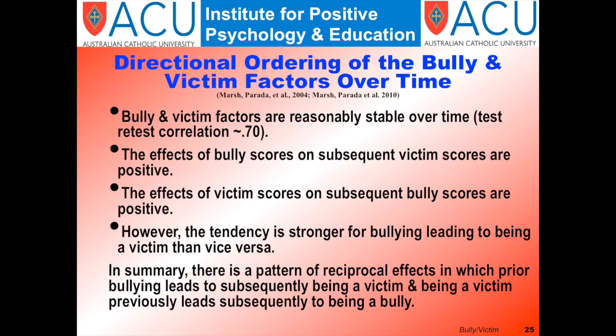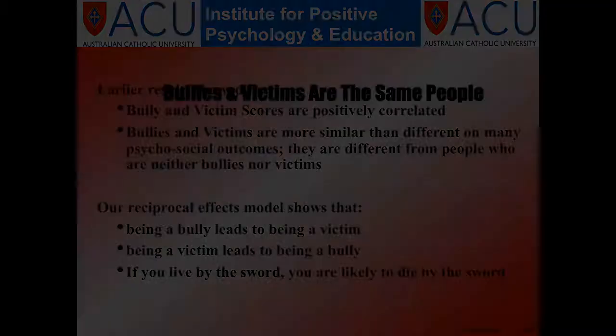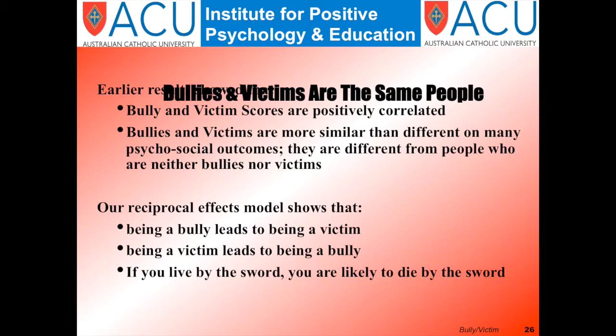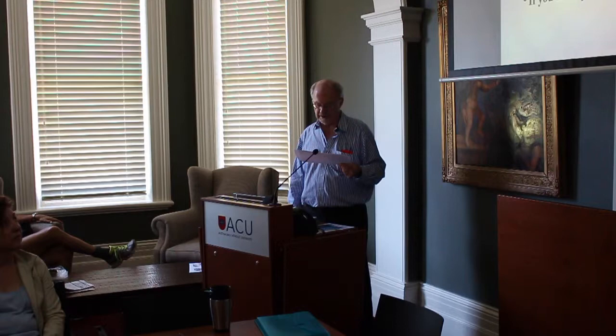In summary, bullies become victims and victims become bullies. Bullies and victims are positively correlated and similar in a variety of ways. Our reciprocal effect model shows that being a bully leads to being a victim, and being a victim leads to being a bully. Many bullies are also victims, and many victims are also bullies. The majority of students are not bullies or victims, but the so-called innocent bystanders are critical in establishing the social ethos of the school that supports a bullying culture.